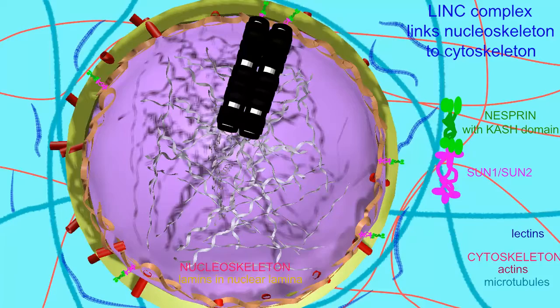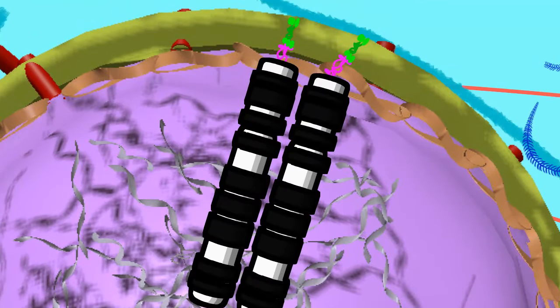And so this LINC process allows chromosomes inside the nucleus to move utilizing the microtubules of the cytoskeleton outside the nucleus.